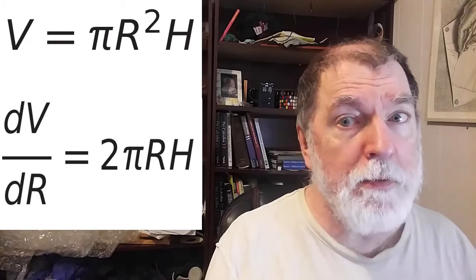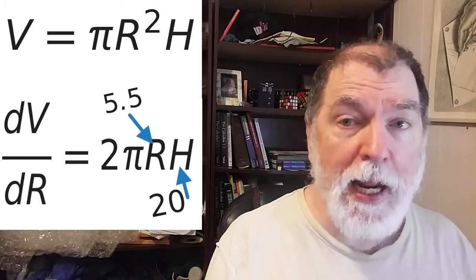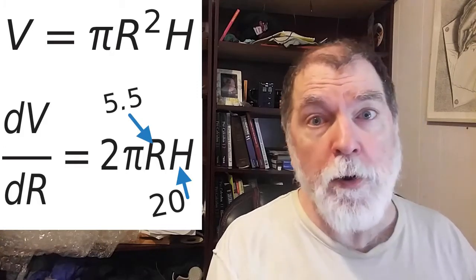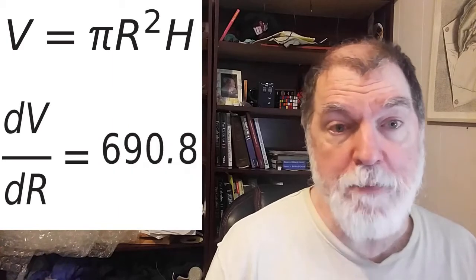And now we plug in our values for R and H, and we get a number for dV by dR. And the number we get is 690.8.